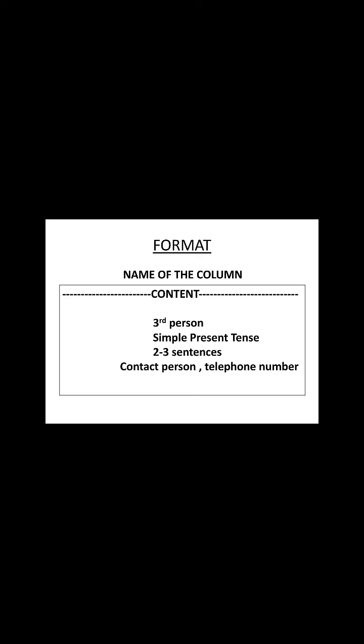Contact person and telephone number should be mentioned. No signatory is required. A classified advertisement cannot be carried to the next page. The format includes the name of the column, then content written in third person in simple present tense. Two to three sentences are expected covering all details. Contact person and telephone number are important — if you write the correct contact number, half the job of the advertisement is done.